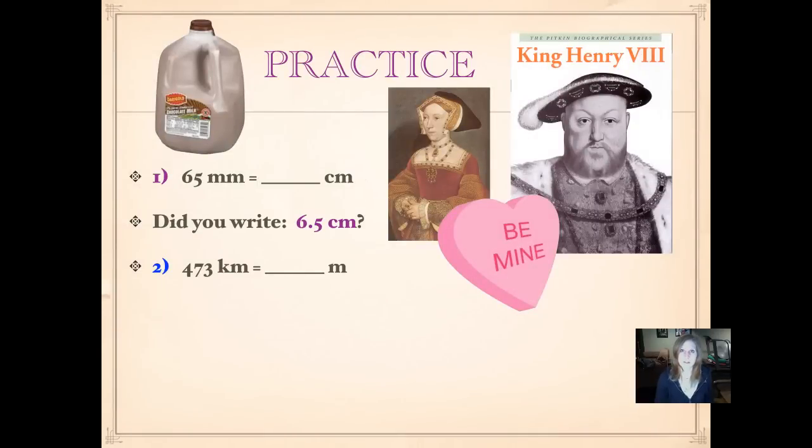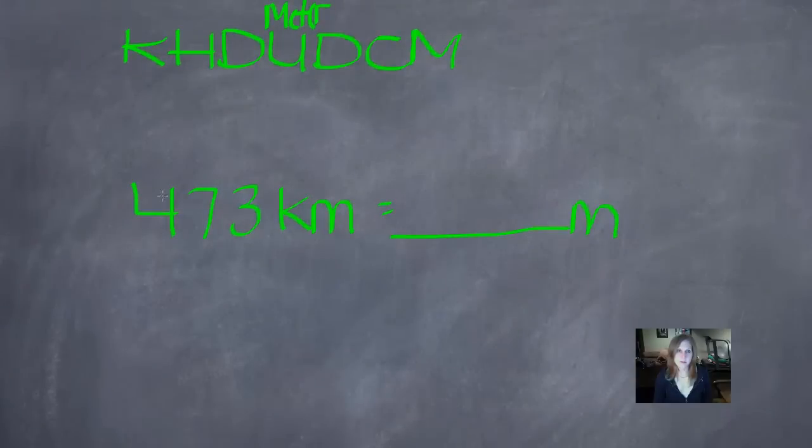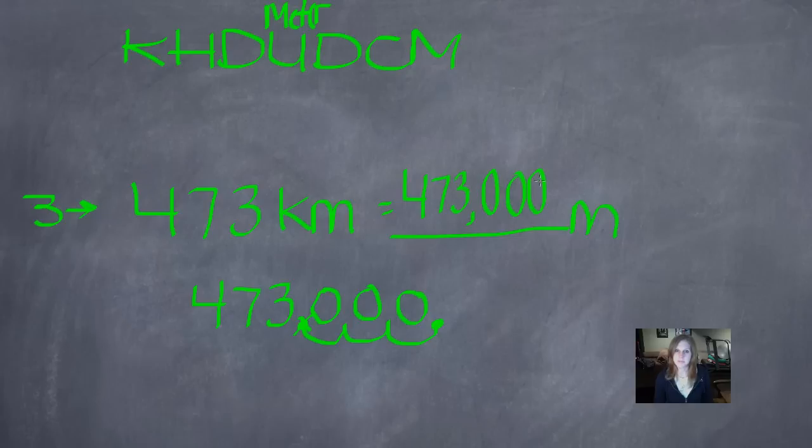Number two: 473 kilometers equals how many meters? Pause it and push play when you're ready. Did you write 473,000 meters? So we start with what we know, kilometers. We know how many kilometers we have. And we're going to jump to meters. So we jump 1, 2, 3 to the right. Let's rewrite this number underneath so we have room to work. Here would be where our decimal is when we don't see one. And we don't have any numbers, so we're going to have to make little egg cups. 1, 2, 3 to the right. Fill those with zeros. We don't need that decimal at the end, but we do need a comma. So we have 473,000 meters. It's pretty easy, huh?